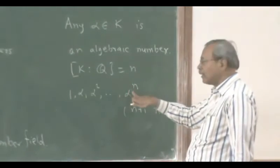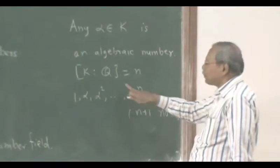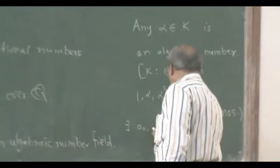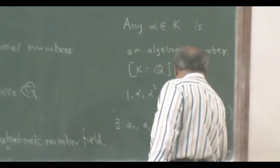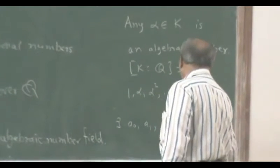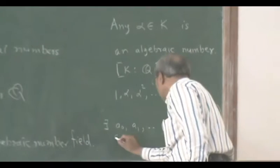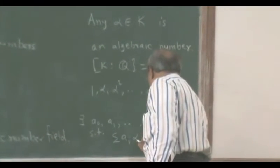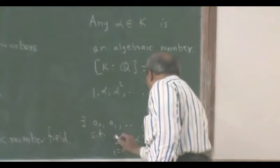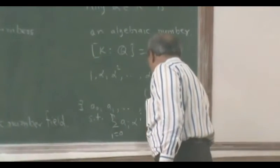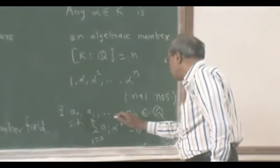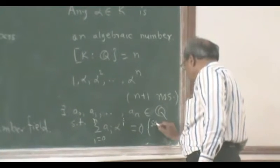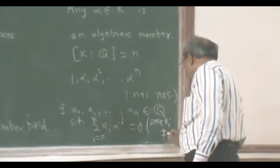up to alpha to the n — they are n+1 numbers. As the dimension is n, they are linearly dependent over the field Q. That means there exist a_0, a_1, and so on, a_n belonging to Q and not all zero, such that the summation of a_i · alpha^i for i equal to 0 to n is zero. So at least one of these a_i is nonzero.